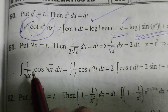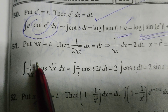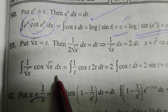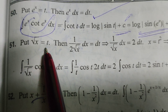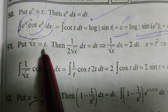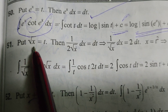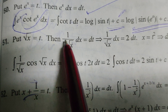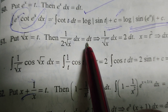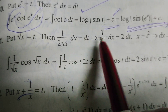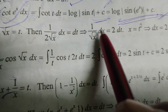Now integrating this problem: integral of (1/√x) · cos(√x) dx. Here, put √x equal to t. Then differentiating: the differentiation of √x gives 1/(2√x) dx equals dt, so 1/√x dx equals 2dt.